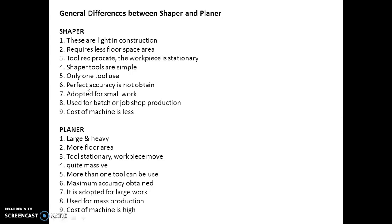In shaper, perfect accuracy is not obtained, but in case of planer maximum accuracy is obtained. Shaper is adapted for smaller work and planer is adapted for larger types of work.